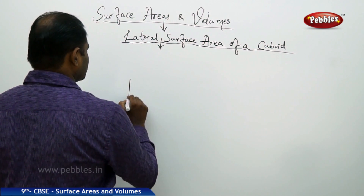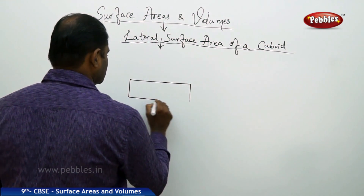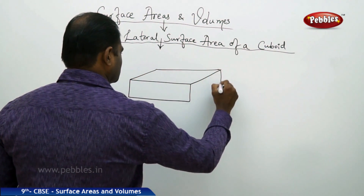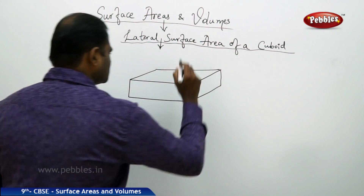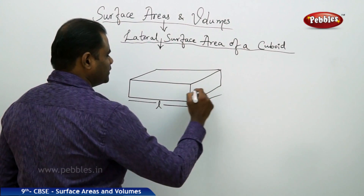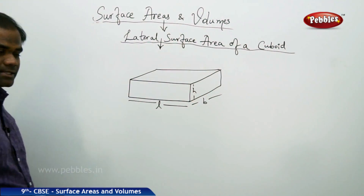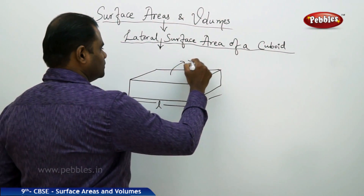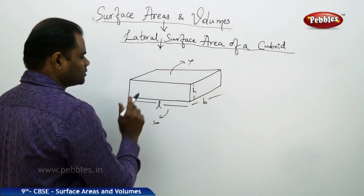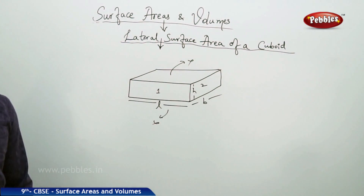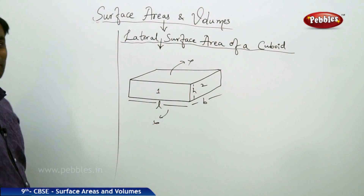Imagine we take a cuboid. Here, this is the length, this is the width, and this is the height. As we include only the four faces but not the top and bottom, only face one, face two, face three, and face four are included. Let us see how we can find the lateral surface area of the cuboid.